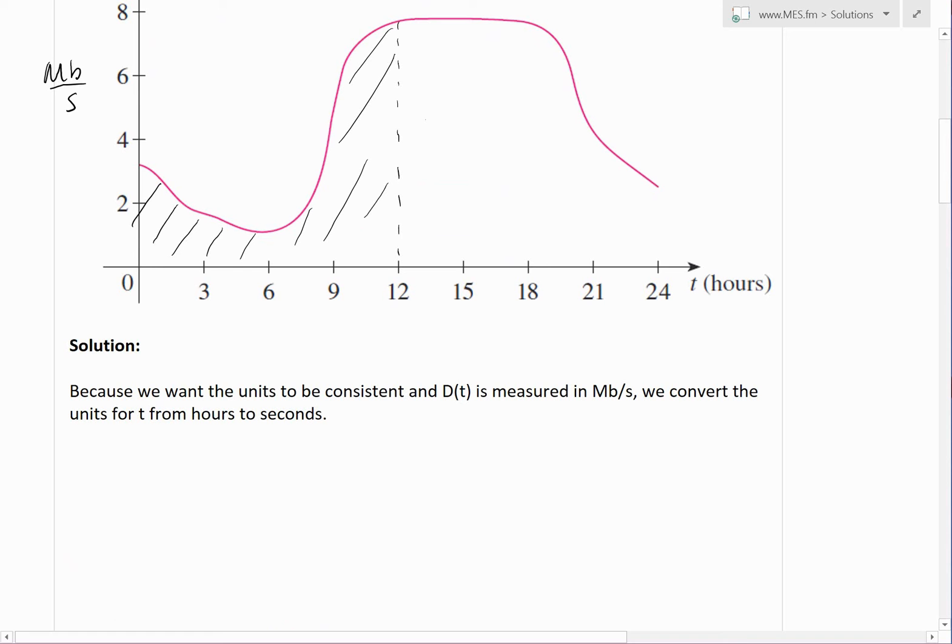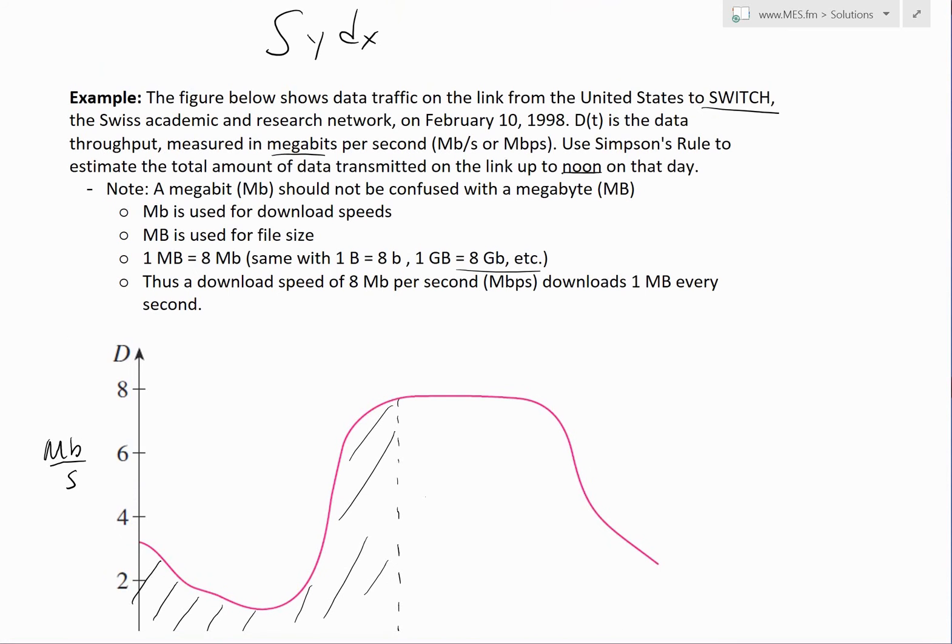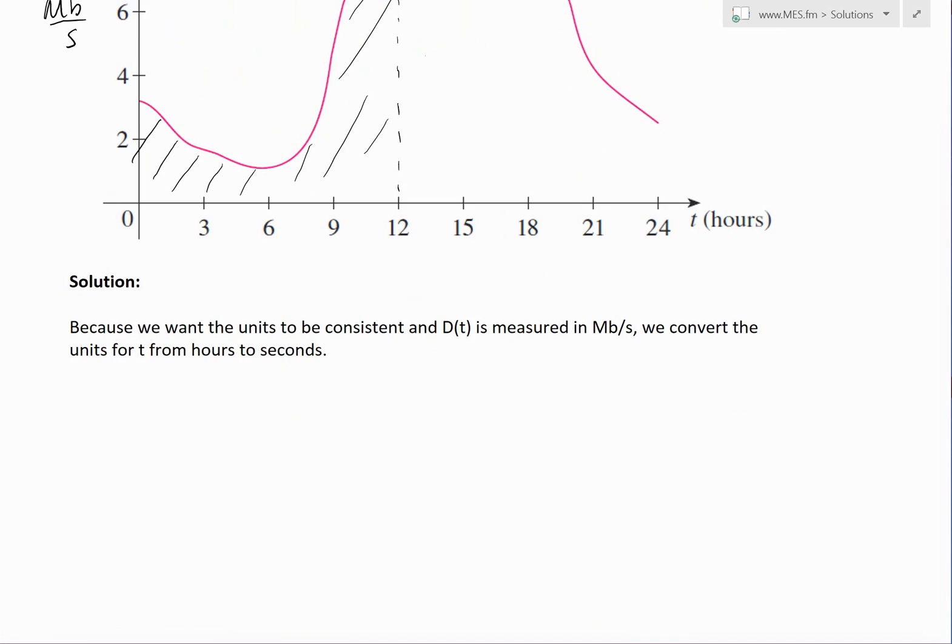Now if we get to the solution, because here we want the units to be consistent, and DFT or the throughput, or basically the amount of megabits being transferred per second, is measured in megabits per second, we convert the units for time from hours to seconds. Here we're given in hours, so we want in seconds to make it all consistent. So to do that, we could do the conversion. One hour times by, we know that one hour there's 60 minutes, so 60 minutes per hour times by, and then we know that there's 60 seconds, 60 seconds per one minute.